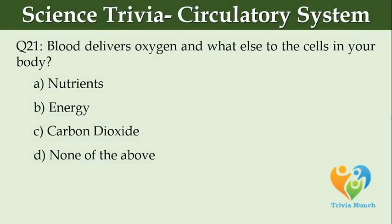Blood delivers oxygen and what else to the cells in your body? Option A: nutrition. Option B: energy. Option C: carbon dioxide. Option D: none of the above.